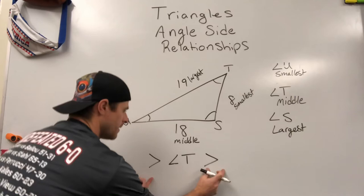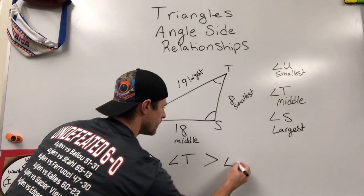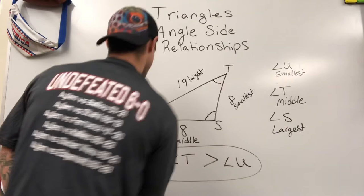Okay, so now I always put the middle one in the middle of my inequality. All right, so angle T is greater than which angle? It's greater than angle U. And it's smaller than or less than angle S. Now you have an inequality that states everything that needs to be said here.